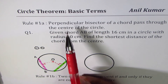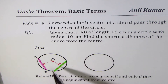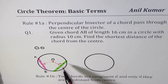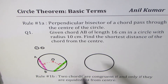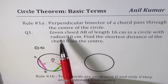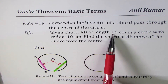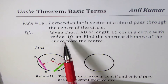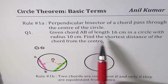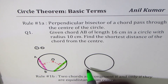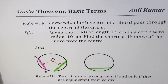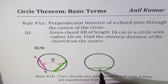From here we see that the perpendicular bisector of a chord passing through the center also helps us find the center by sketching two chords and using their perpendicular bisectors. Now let's look into this question: given chord AB of length 16 cm in a circle with radius 10 cm, find the shortest distance of the chord from the center. Let's take a chord here with length 16 cm.